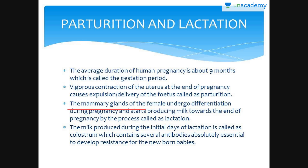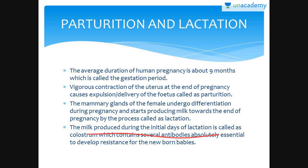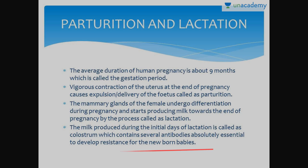The mammary glands of the female undergo differentiation during pregnancy and start producing milk towards the end of pregnancy by a process called lactation. The milk produced during the initial days of lactation is called colostrum, which contains several antibodies absolutely essential for developing resistance in newborn babies.